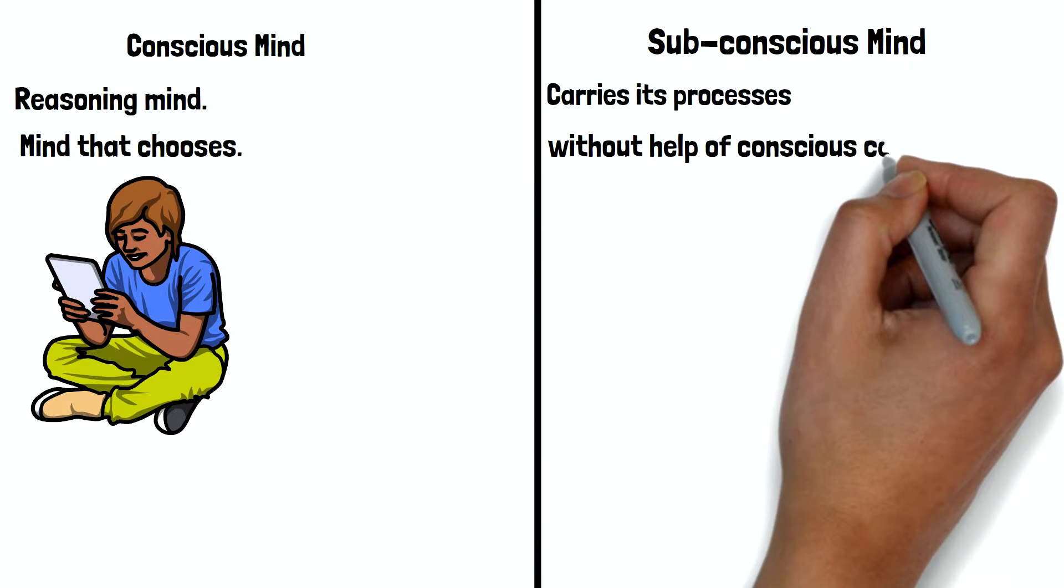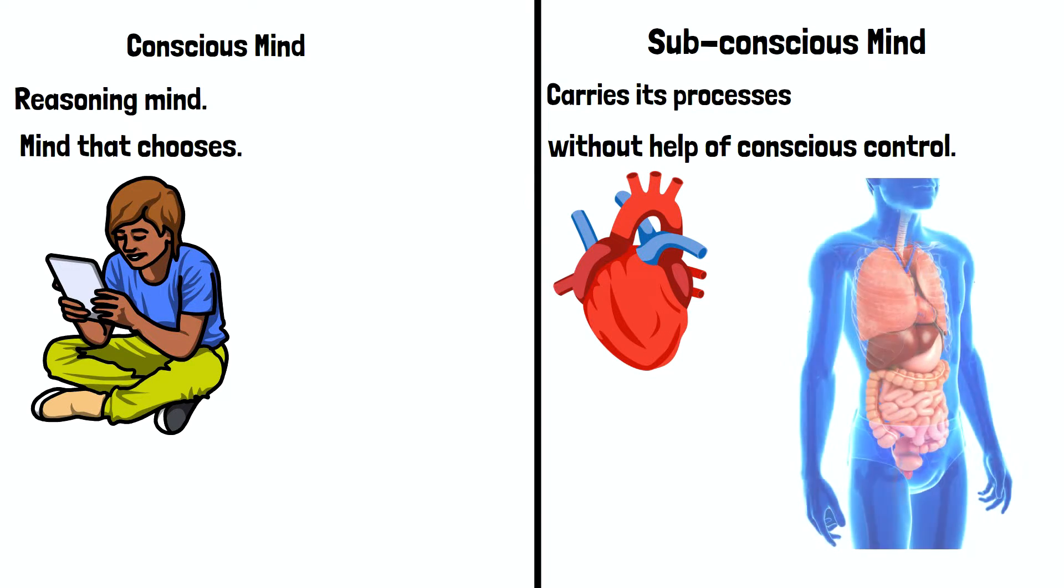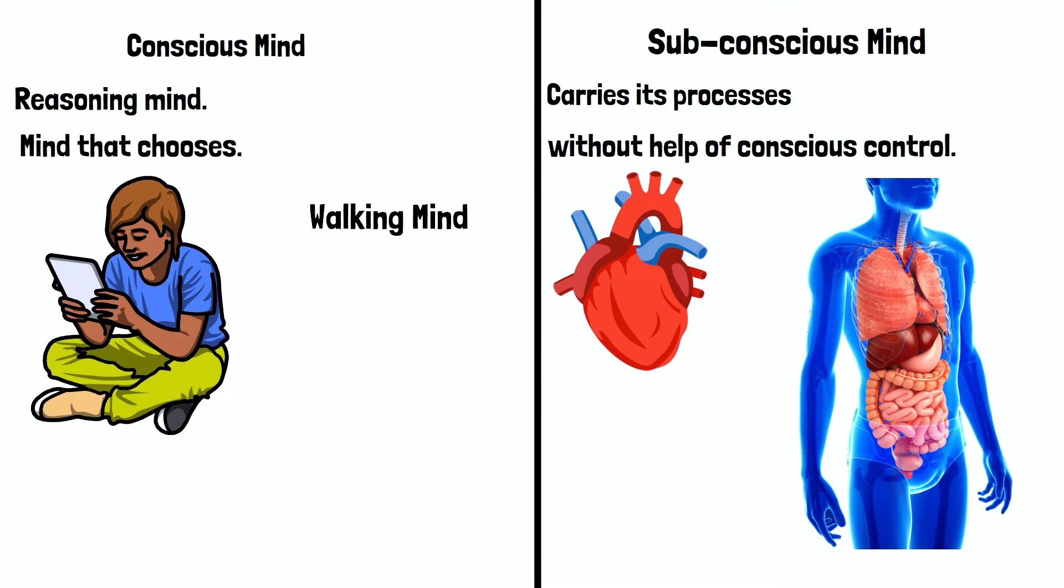Whereas subconscious mind carries its processes without the help of your conscious control. For example, your heart is kept functioning automatically. Vital functions of your digestion, circulation and respiration are being carried out. They are also called waking and sleeping mind, voluntary and involuntary mind.